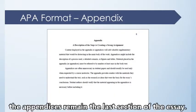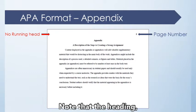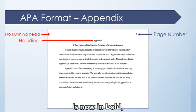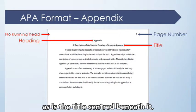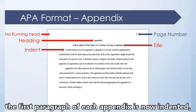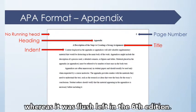Finally, the appendices remain in the last section of the essay. Note that the heading 'Appendix,' or 'Appendix A,' is now in bold, as is the title centered beneath it. Additionally, the first paragraph of each appendix is now indented, whereas it was flush left in the 6th edition.